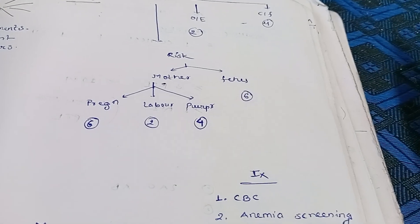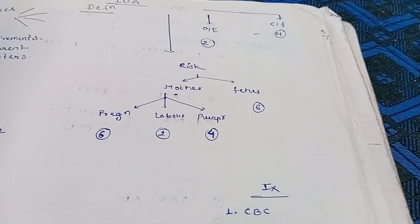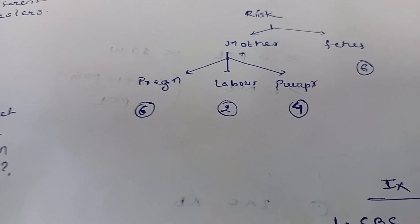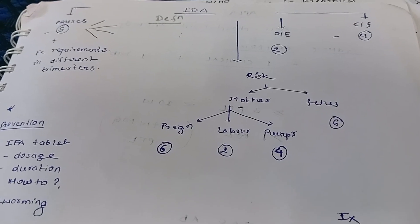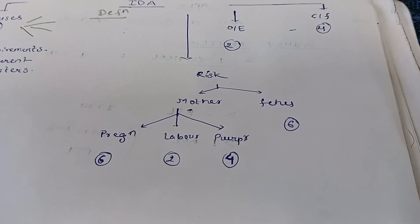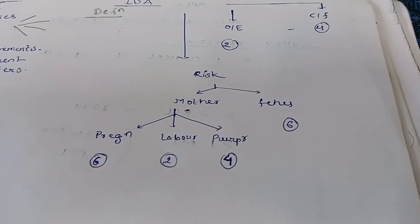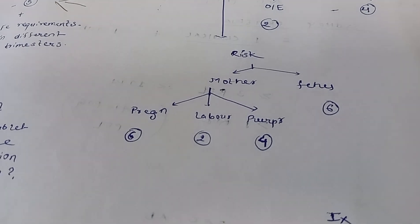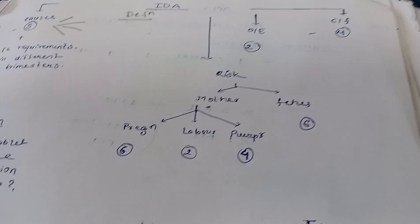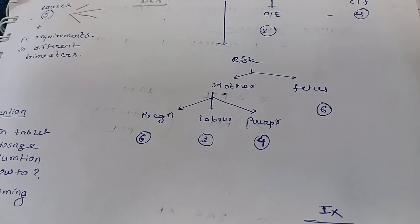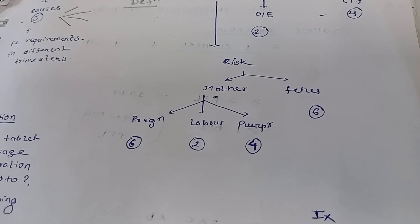The complications for the mother during pregnancy include chances of abortion, heart failure, preterm labor, and preeclampsia. During labor, complications are heart failure and postpartum hemorrhage. Heart failure is common in all three stages — during pregnancy, during labor, and during puerperium. Puerperium is the stage of six months after delivery.